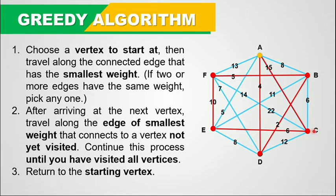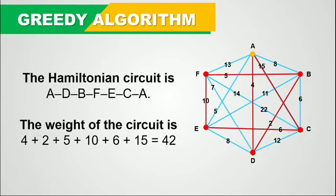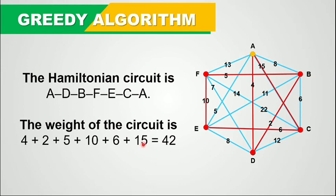That's why we need to go back to our starting vertex. The Hamiltonian circuit is: A to D, then to B, to F, to E, to C, and then back to A. Now let's add their corresponding weights: 4 plus 2 is 6, plus 5 is 11, plus 10 is 21, plus 6 is 27, and plus 15 is 42. So that is the Hamiltonian circuit determined using the greedy algorithm, and 42 is the sum of their weights.